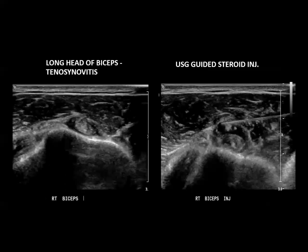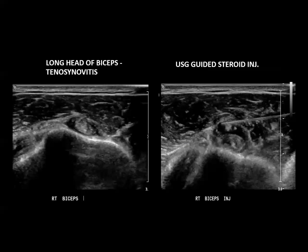Another example: injection of the long head of biceps. The ultrasound image shows fluid around the biceps tendon suggesting tenosynovitis. You can see the needle tip and extension of the tendon sheath — just a potential space of a few millimeters. This procedure was done very frequently in Canada, with three or four referrals per day.